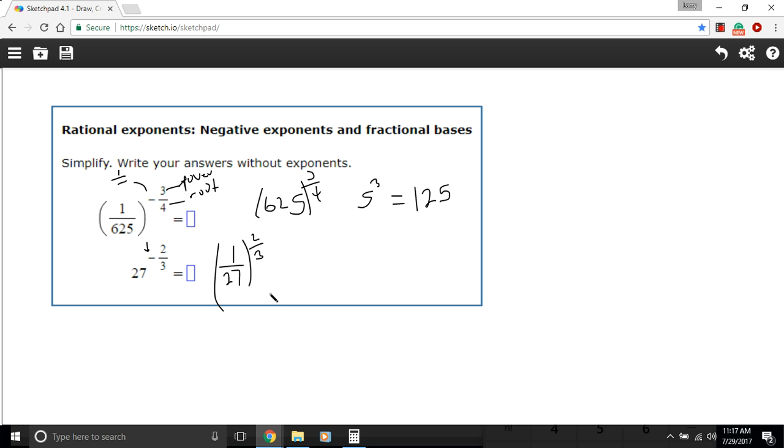When we have a fraction like this that we apply an exponent to, we apply the exponent to the top and apply the exponent to the bottom. On the top we really don't have to do anything. One to the two-thirds power is still going to be one. One times however many times of itself is always just going to be one. So we're going to have one on the top.